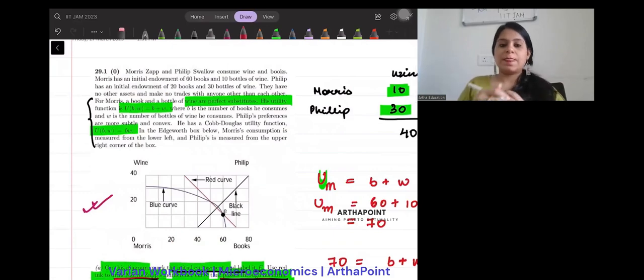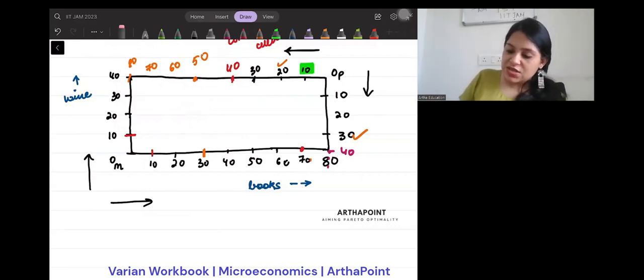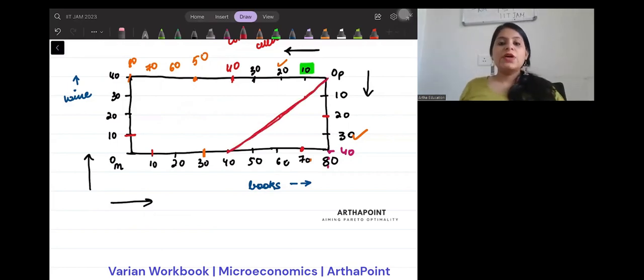Now here is the thing. See, you have to understand that, oh this is from the side of Morris. Sorry, I need to draw it from the side of Philip. Philip was on the y-axis. So it is going to be the reverse. So 10 equal to 10, 20 equal to 20 will be here, and then 30 equal to 30 will be here and 40 equal to 40 will be here. So this will be my contract curve. So you have to understand that all Pareto efficient points are going to lie on this contract curve.